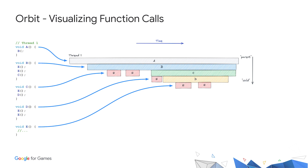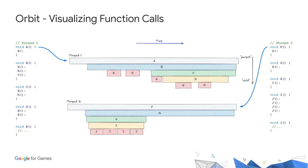A very good way to build this mental model is by visualizing function calls. We can see that the code on the left can be represented by the diagram on the right. In Orbit, we call this diagram a flame chart. On a flame chart, the x-axis is time. Sequential function calls will appear from left to right, and the width of a rectangle corresponds to the time it took for the function to execute. The y-axis corresponds to the function call hierarchy where nested function calls appear from top to bottom. Visualizing multiple threads is also very intuitive — we simply have multiple flame charts on the same timeline, which is very useful to visualize interaction between threads.